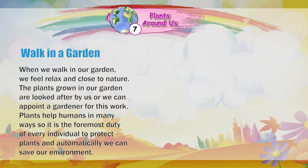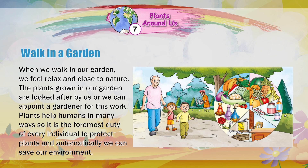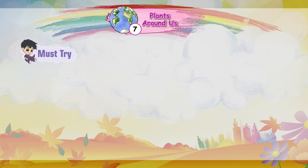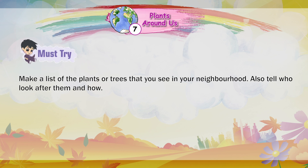When we walk in our garden, we feel relaxed and close to nature. The plants grown in our garden are looked after by us, or we can appoint a gardener for this work. Plants help humans in many ways, so it is the foremost duty of every individual to protect plants and automatically we can save our environment. Make a list of the plants or trees that you see in your neighbourhood. Also tell who looks after them and how.